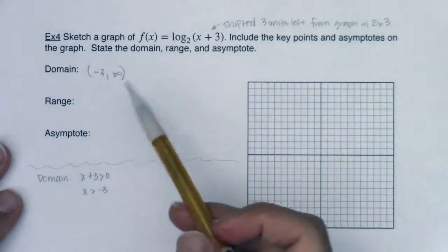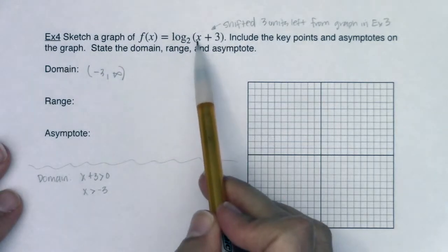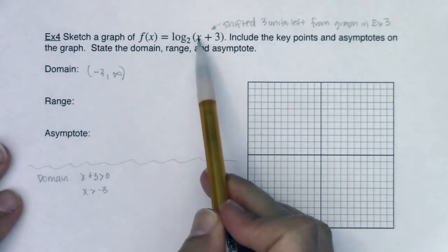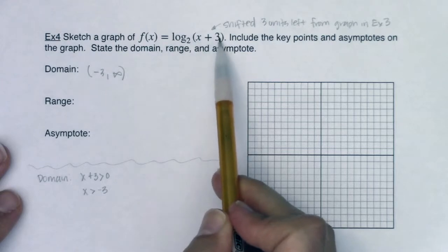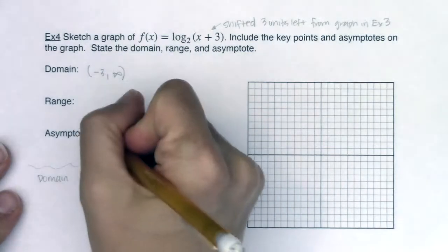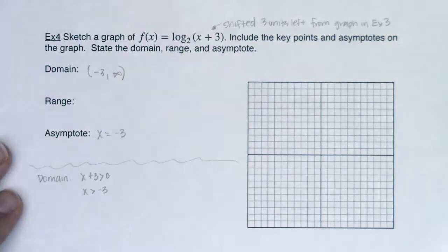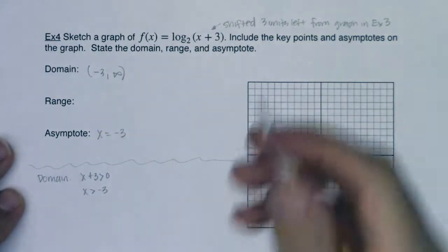And another fun thing is whatever zeroes out your argument, and we know negative 3 zeroes out my argument because negative 3 plus 3 is 0, that automatically turns into my vertical asymptote. So I'm going to go put this on the graph.